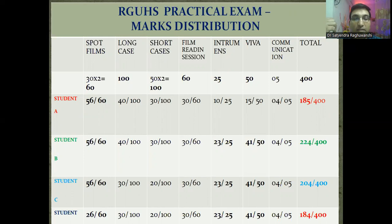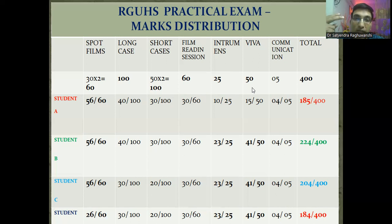The distribution of marks is: spotters 60 marks, long case 100 marks, two short cases of 50 marks each amounting to 100 marks, film reading session of 60 marks, instruments of 25 marks, table viva of 50 marks, and communication given as 5 marks. Total it accounts to 400 marks.